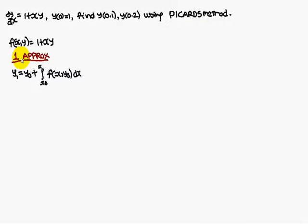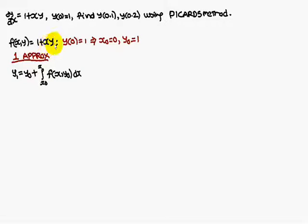f(x, y) — the first approximation of Picard's method is y1 is equal to y0 plus the integral from x0 to x of f(x, y0) dx. The given f(x, y) is 1 plus xy. And y(0) is equal to 1, which implies x0 is 0 and y0 is 1.